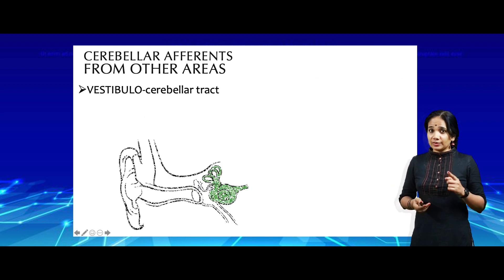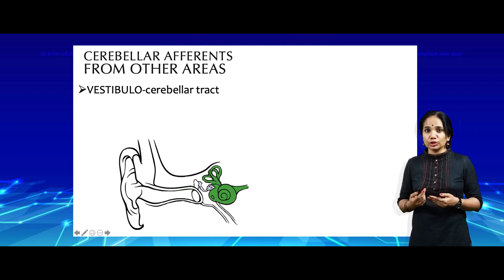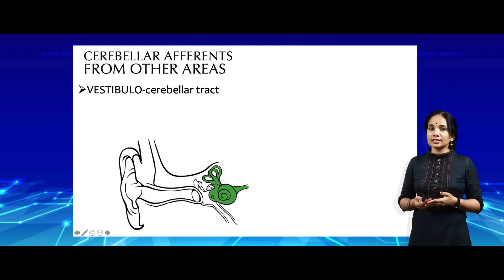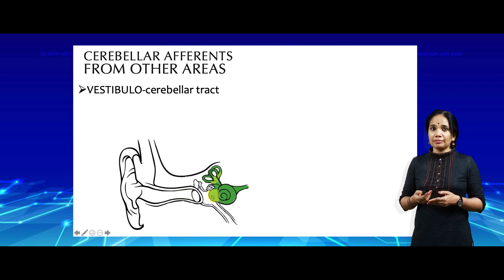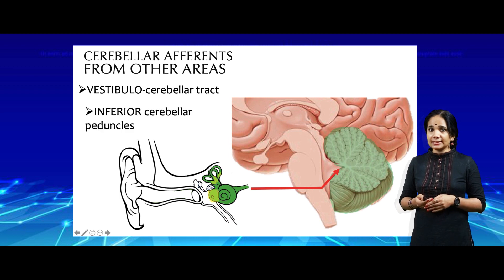The vestibulo-cerebellar tract is very special in the sense that it starts from our internal ear. We have organs specialized to detect rotatory motion, linear acceleration, and head position — these are the utricle, saccule, and the ampullary organs of the semicircular membranous labyrinth. These messages are passed along the vestibulo-cochlear nerve, which reaches the vestibular nuclei, and from there it enters the cerebellum via the inferior cerebellar peduncles.